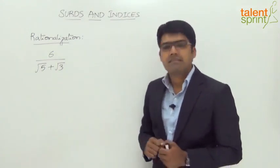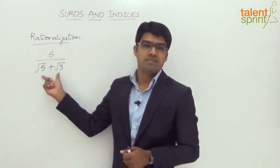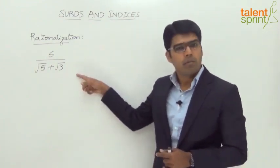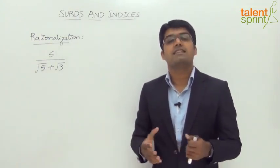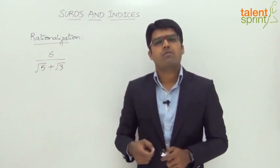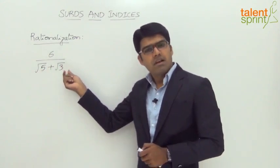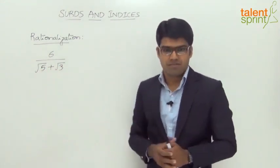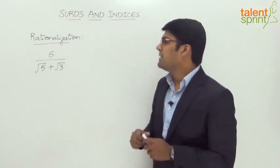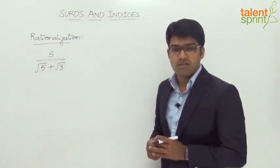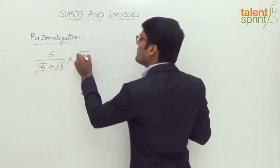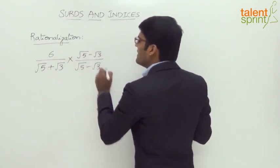Let us look at this fraction: 6 upon root 5 plus root 3. Here we have a combination of surds in the denominator. The method remains the same — multiply both numerator and denominator with the rationalizing factor of root 5 plus root 3. The rationalizing factor of an expression with two surds is nothing but the conjugate of the given expression. A conjugate is obtained by negating the second term of the given binomial expression. So for root 5 plus root 3, the rationalizing factor is root 5 minus root 3.